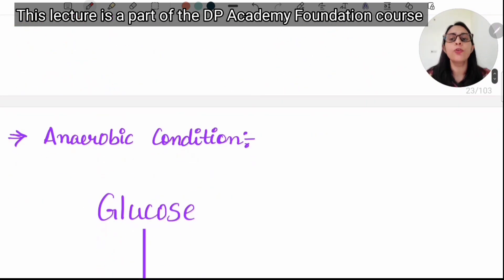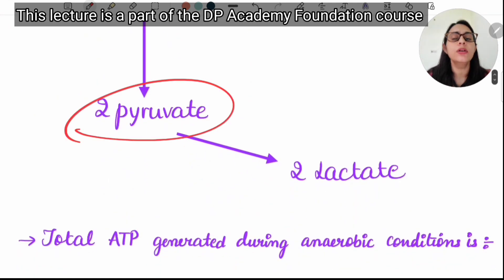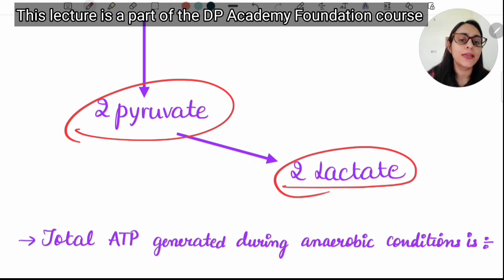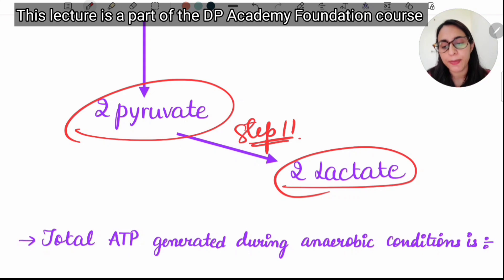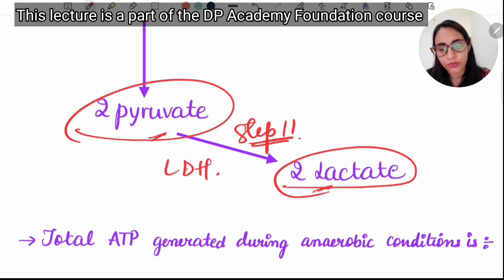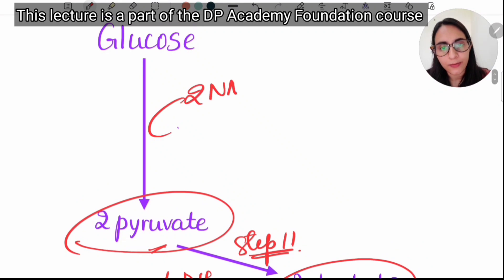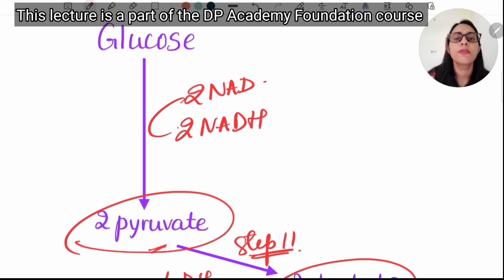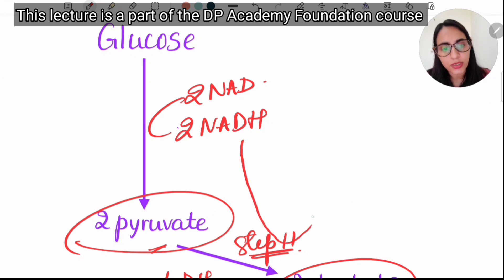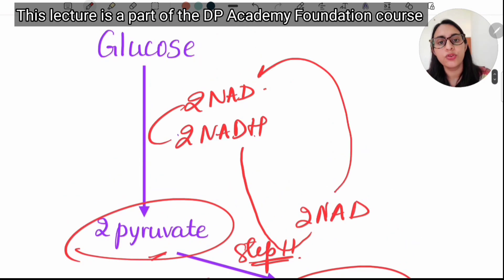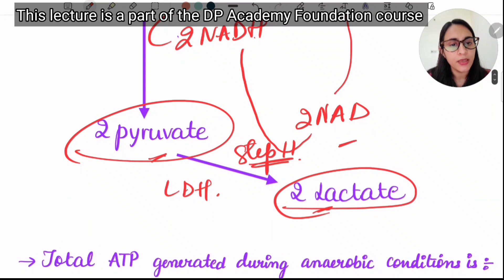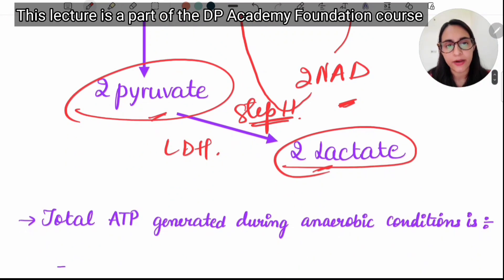In anaerobic conditions (absence of oxygen), pyruvate is not the final product — lactate is. This is step 11 of glycolysis. Pyruvate is converted to 2 lactate by lactate dehydrogenase. The 2 NADH produced earlier are consumed at step 11, converting back to 2 NAD+, which are reused in glycolysis. Therefore, the 5 ATP from NADH are not generated in anaerobic conditions.